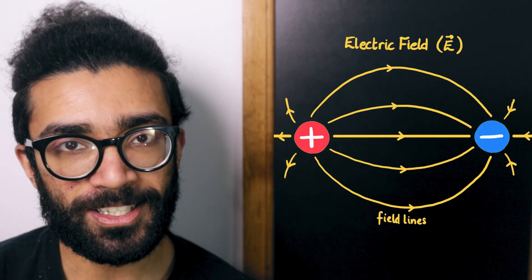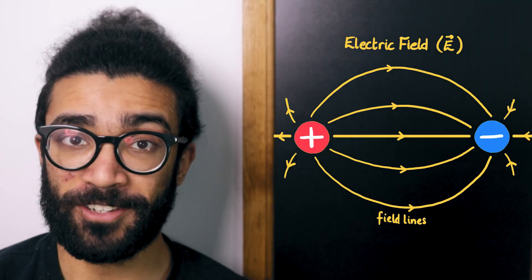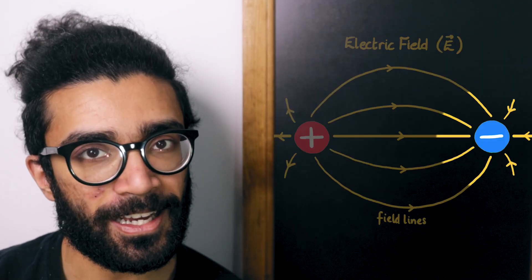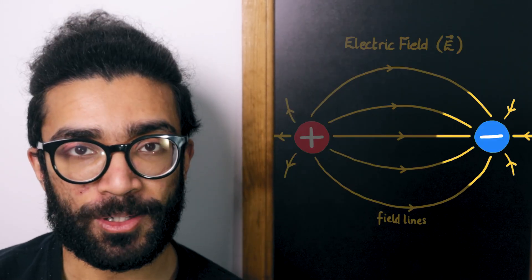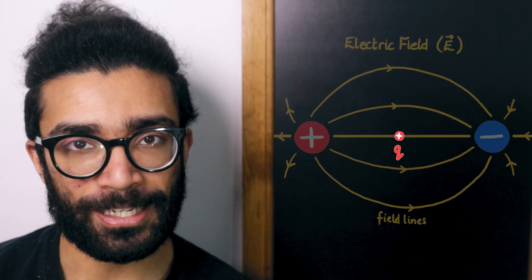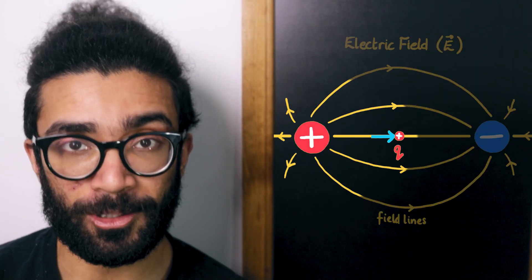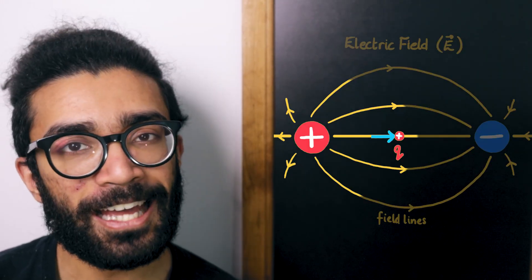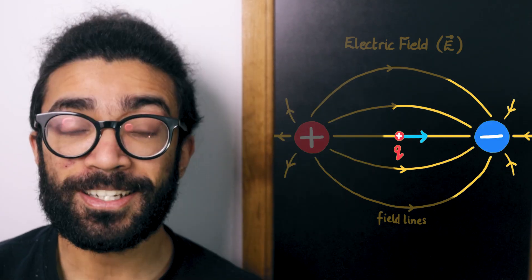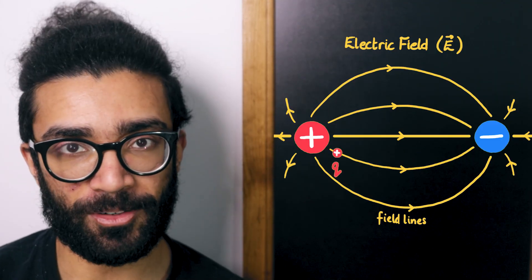Electric fields can be used to describe how electric charges interact with each other. The convention we most often use in physics is that electric field lines begin at positive charges and end at negative charges. These field lines essentially represent the force that a small positively charged particle would experience if we were to place it in the electric field. Like charges repel, so the small positive charge will be repelled from the large positive one, and opposite charges attract, so the small positive charge will be attracted to the negative charge. But these electric field lines give us a little bit more detail about exactly how this small positive charge would interact with the electric field.